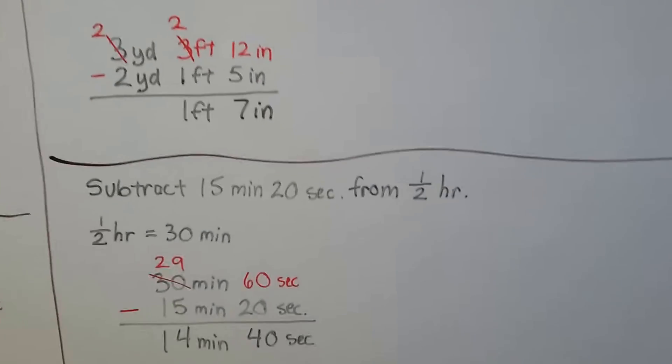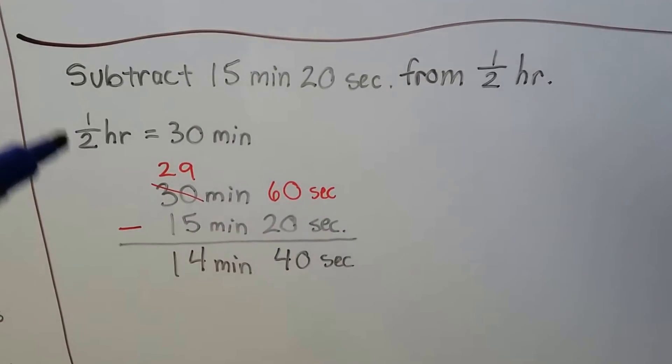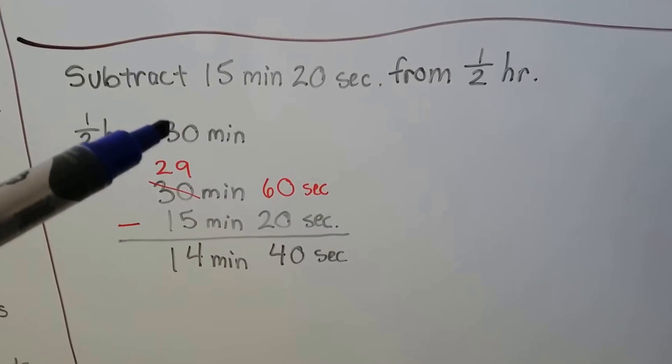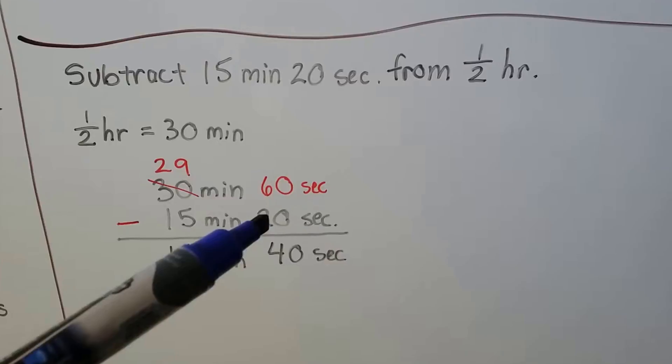This one says subtract 15 minutes 20 seconds from a half hour. Well, a half hour is 30 minutes, right?